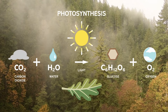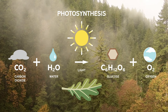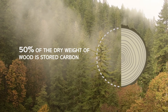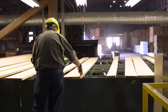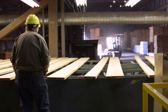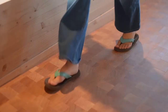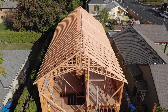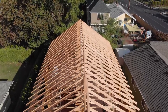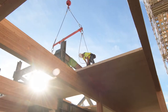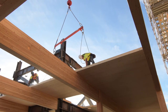Trees absorb carbon dioxide from the atmosphere, and through the process of photosynthesis convert it to sugars and lock carbon away in wood. Fifty percent of the dry weight of wood is carbon taken from our atmosphere. Even after a tree is turned into a wood product, the carbon remains in the wood and is stored for the life of the product. Life cycle analysis and environmental product declarations of wood products have documented their carbon storage and other environmental benefits.